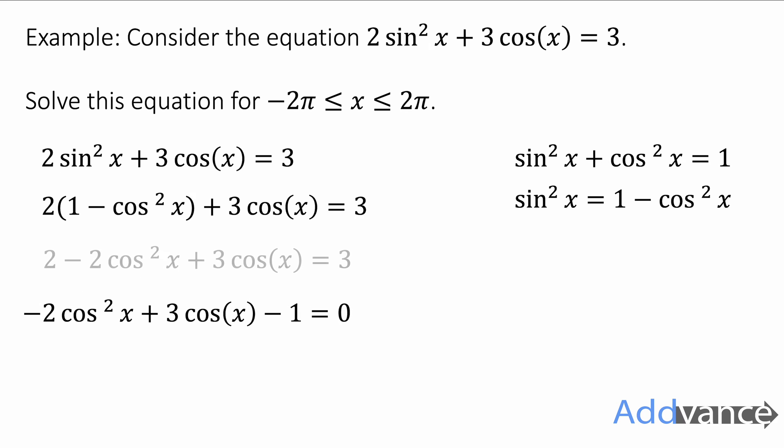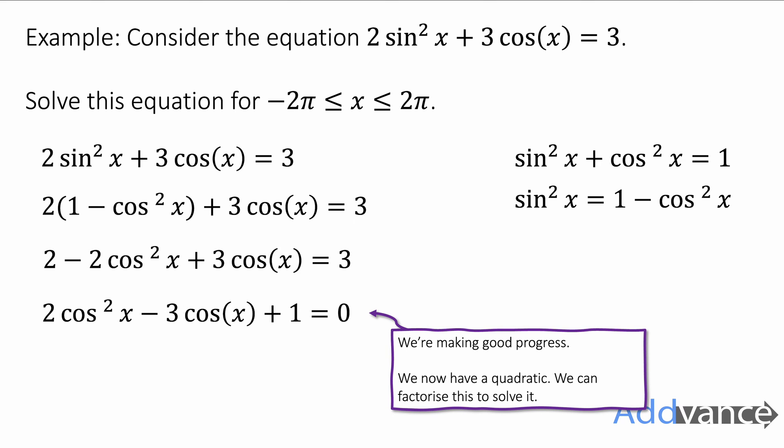We take 3 off both sides and we get it equal to 0 and it is now a quadratic. We can solve that quadratic by factorizing. Now at the moment it says -2 in front of the cos² x so I'm going to make everything negative, so the -2 becomes +2, the +3 becomes -3, and the -1 becomes +1. I'll make everything negative, swap all the signs, and now this is a quadratic and we can factorize it to solve it. This is a quadratic with a 2 in front of the squared part.